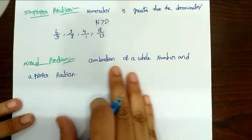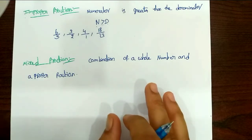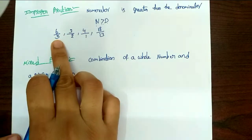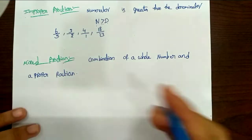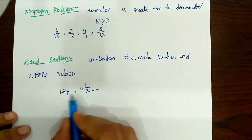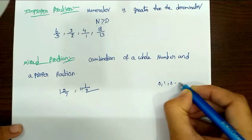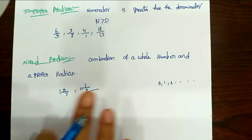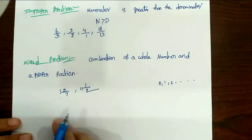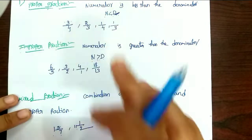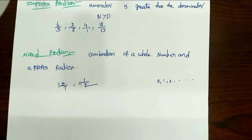Next, let's look at the mixed fraction. Mixed fraction means a combination of a whole number and a proper fraction. We use a mixed fraction when we have a whole number combined with a proper fraction. So the numbers that are proper, improper, and mixed have been classified.